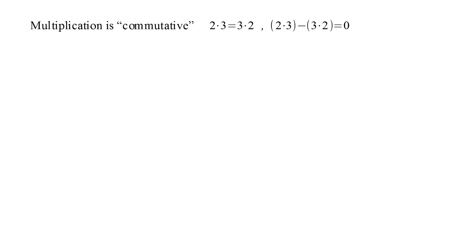We say that multiplication is commutative. Two times three equals three times two. Equivalently, two times three minus three times two equals zero. Multiplication is commutative because it doesn't matter in which order we multiply two numbers. We get the same result in either case. On the other hand, division is not commutative. Two divided by three is not equal to three divided by two, or two-thirds minus three-halves is not equal to zero. With division, it does matter in which order we divide two numbers.